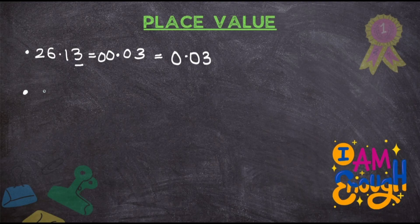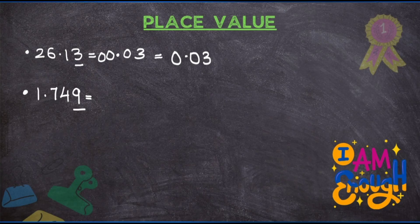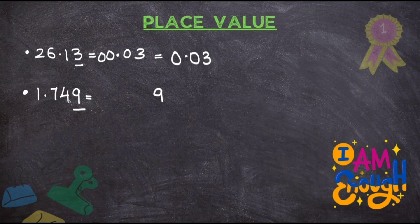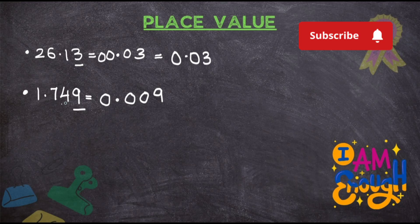I will take the second question: 1.749 where 9 is underlined. What you have to do? As I said, just write the number which is underlined first: 9. Now, put 0 for all other numbers and you have to make sure that you are putting the decimal properly. 4 is there, put a 0. 7 is there, put a 0. Then there is a point, put a point. There is a 1, put it as 0. So your answer, that is place value of 9 in number 1.749, will be 0.009.